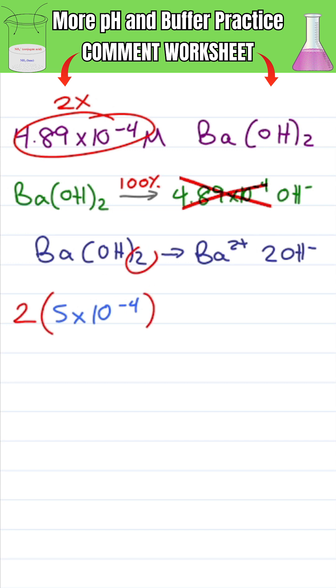Multiply that by 2 to give me 10 times 10 to the minus 4 OH minus or 1 times 10 to the minus 3.